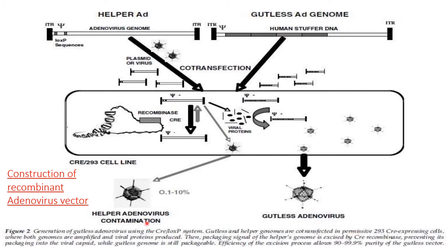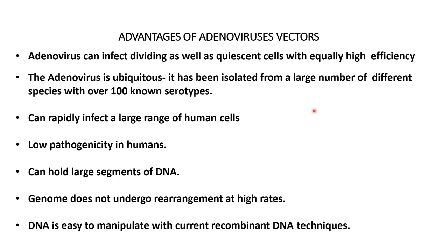If there is contamination — if the helper adenovirus manages to put its DNA inside the viral protein — that contamination will be only 0.1 to 10 percent. The 90 to 99.9 percent purity of the gutless vector can be synthesized through this process. Advantages of adenovirus: it can infect dividing as well as non-dividing cells with equally high efficiency.